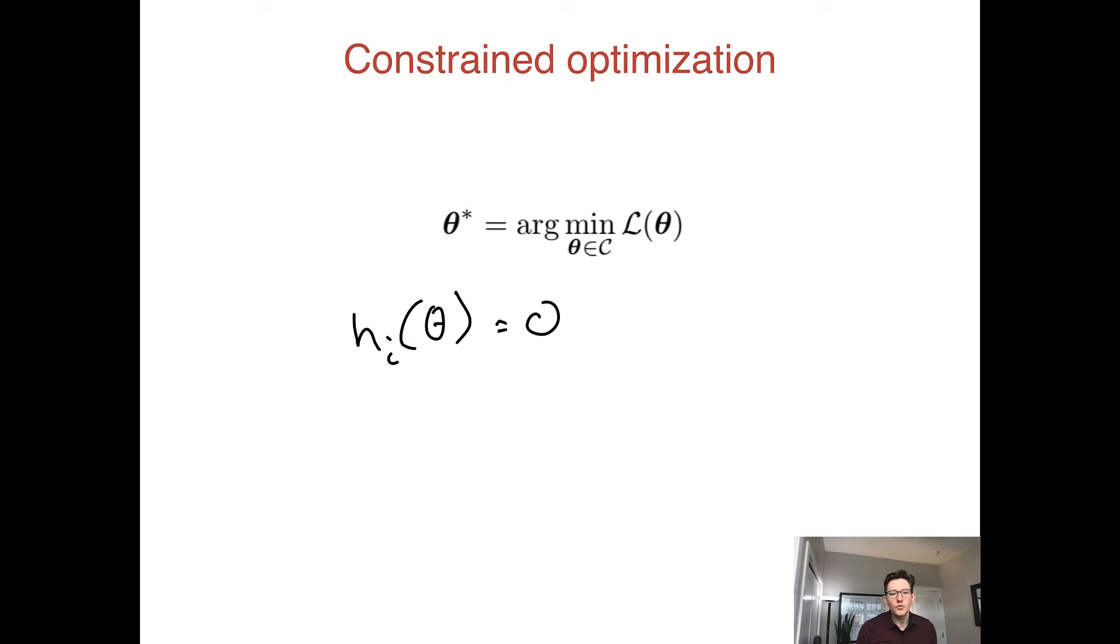Sometimes we have constraints that we can optimize more easily if we write them as inequality constraints, so that g_j(θ), where j is the index of the constraint, has to be less than or equal to zero. Notice that in both of these cases we could pick some other value, but without loss of generality we put zero here.